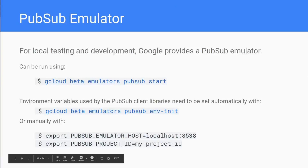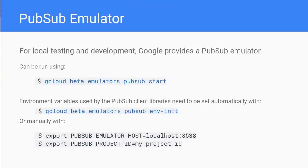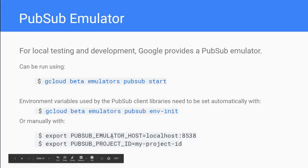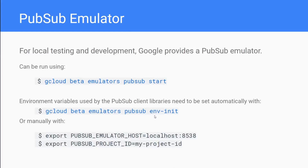Sometimes when you're testing and developing you don't want to use the actual live Google PubSub. Luckily Google provides a local PubSub emulator - if you've installed the Google Cloud SDK you can run it with `gcloud beta emulators pubsub start`. To use the local emulator you need to set a couple of environment variables: set `PUBSUB_EMULATOR_HOST` to `localhost` and the port number it's using, and also export `PUBSUB_PROJECT_ID`. This tells any program running the Python client library to use the local emulator rather than the actual Google PubSub instance.